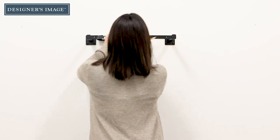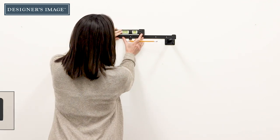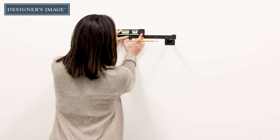Place the bracket against the wall in the desired position. Make sure the bracket is facing the right direction with the lip of the support arm pointing up. Use a level to mark holes with a pencil.